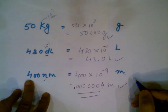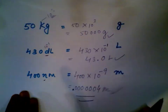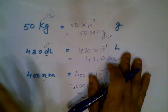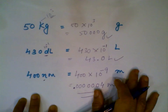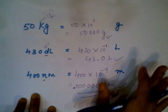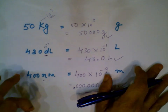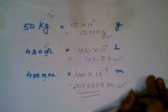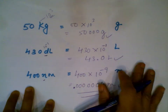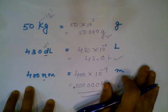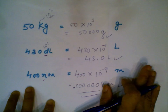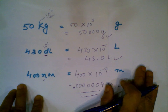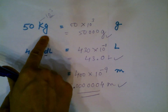Both methods — moving the decimal on the stair step and using prefix power values — are equivalent techniques. One just saves time if you already know the prefixes. This system has two conditions: first, you must be working within the metric system, since it is based on powers of 10.